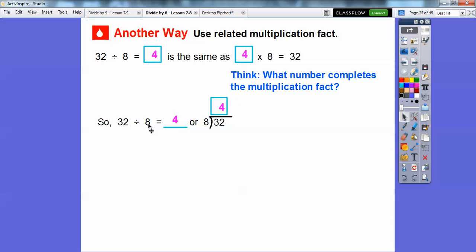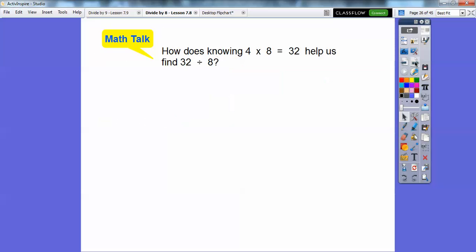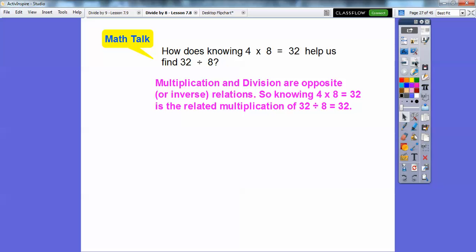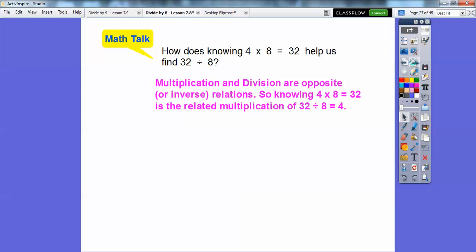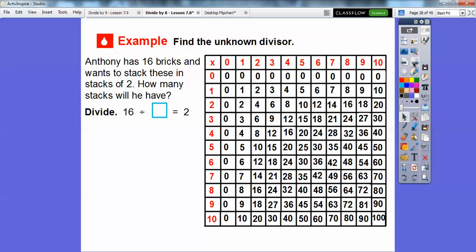So just like we did before, 32 divided by 8 equals 4. Or this way, 32 divided by 8 equals 4. Whichever way. So how does knowing 4 times 8 help us find 32 divided by 8? Well, multiplication and division are opposite or they're inverse relations of each other. So knowing what 4 times 8 is, 32 is the related multiplication of the division problem. 32 divided by 8 equals 4. I made a mistake. There should be a 4 right there. I make mistakes all the time. I had a parent just email me of a mistake I made. I make them all the time. I make them in my classroom all the time.